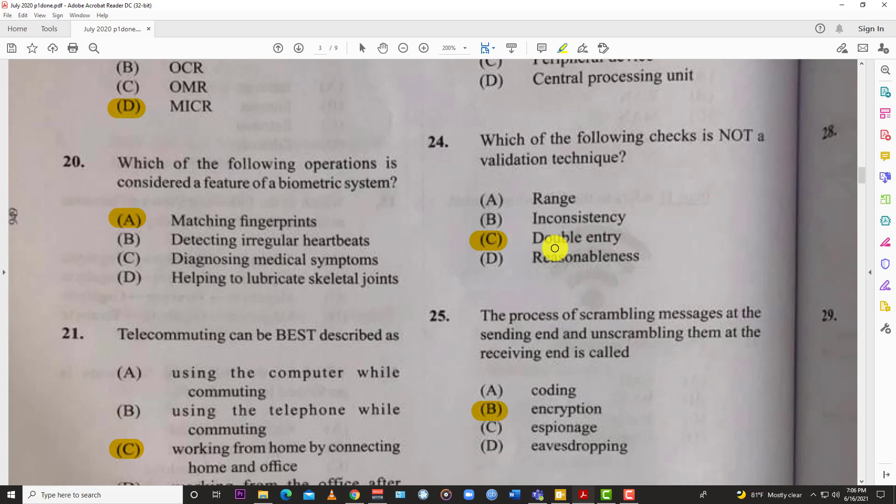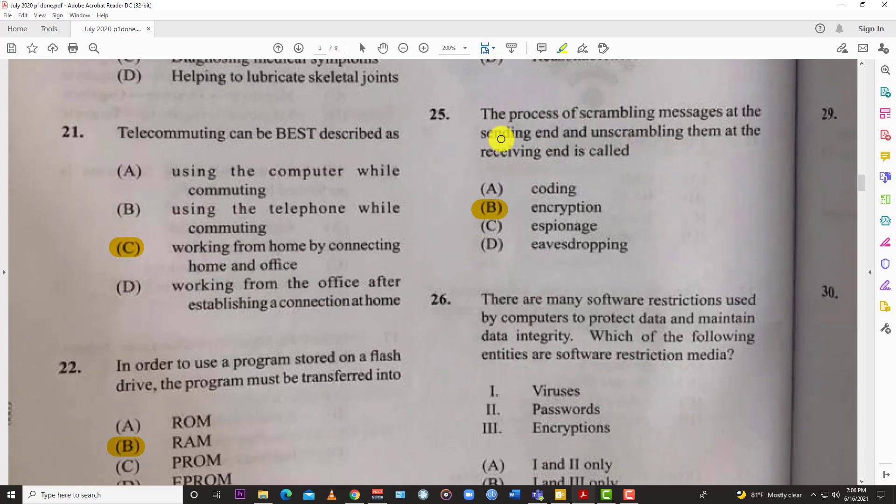Number twenty-five: which process of scrambling a message at the sending end and unscrambling on the receiving end is called encryption. That's what WhatsApp does with your messages - they encrypt them so no one can pick them out of the air when packets are being transferred from one end to the next. If they do intercept them, all you're gonna see is gibberish because they were encrypted.